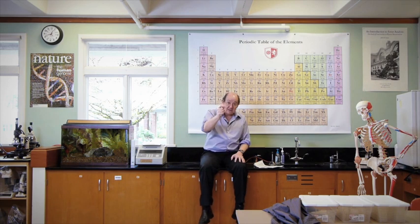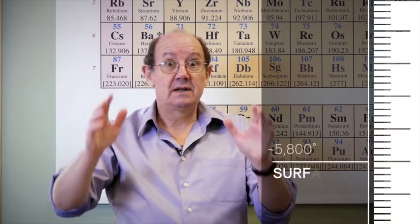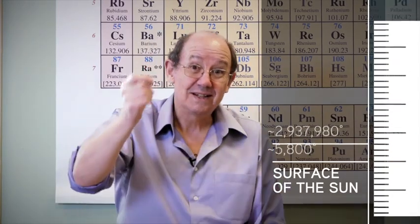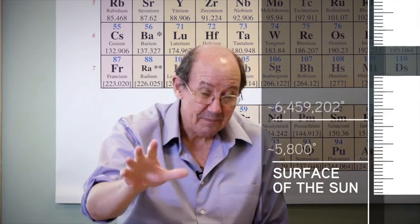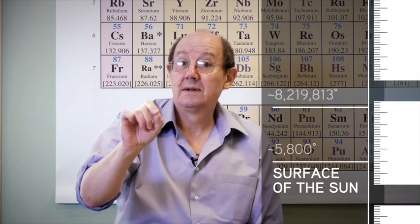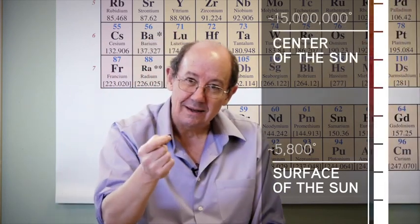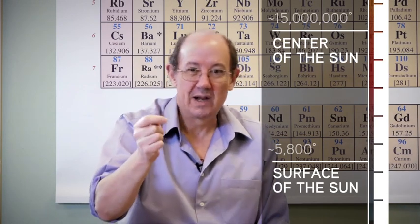The nearest star to us is our sun. At the surface the sun is 5,800 degrees celsius but at its center it's 15 million degrees. Now think about that. Water boils at about 100 degrees celsius, that's about 373 degrees above absolute zero, the coldest temperature there is. So the center of the sun is about 40,000 times hotter than boiling water.